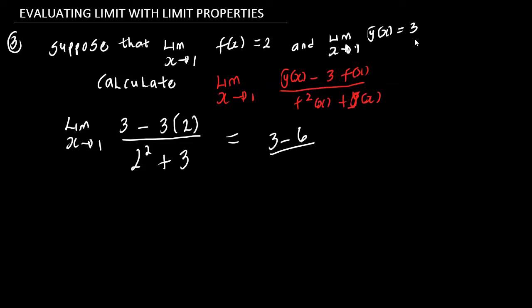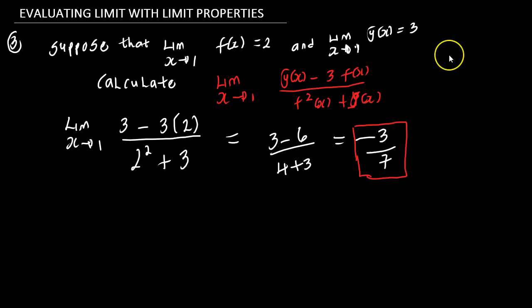So this is going to be equal to 3 minus 6, then divided by 2 squared which is 4, plus 3. 3 minus 6 gives us negative 3, then divided by 7. So this is going to be negative 3 over 7, and that is the limit.